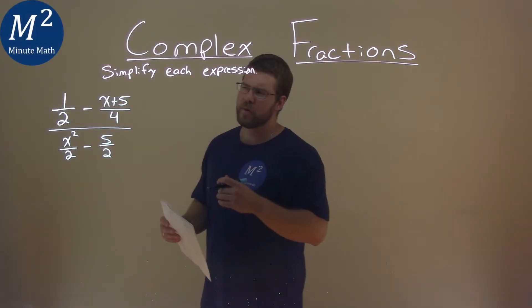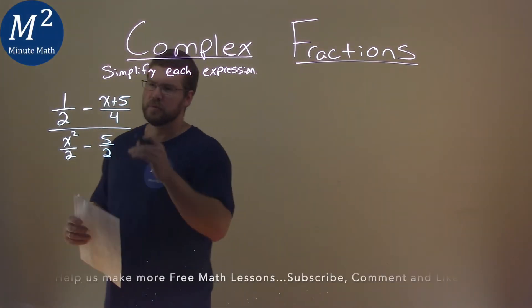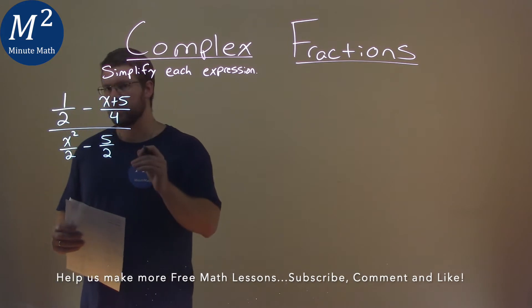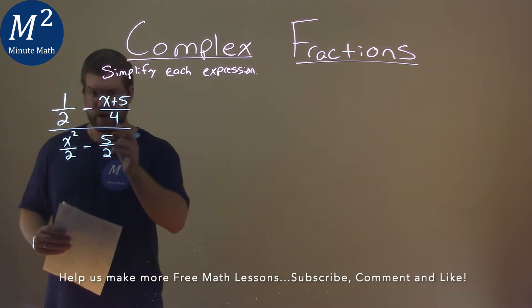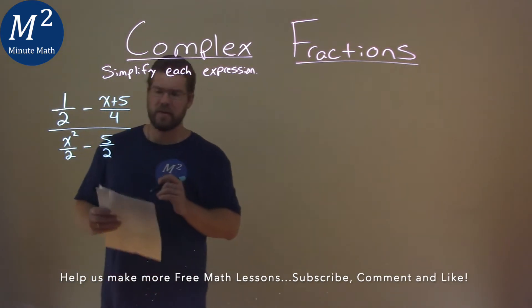We're given this problem right here: 1 over 2 minus x plus 5 over 4, all of that over x squared over 2 minus 5 over 2. And we have to simplify this expression.